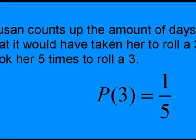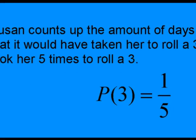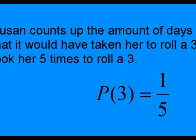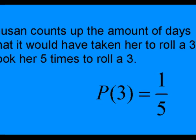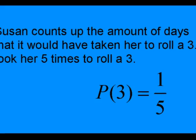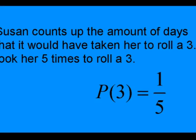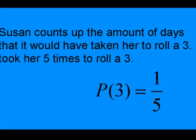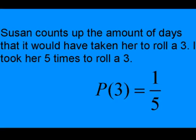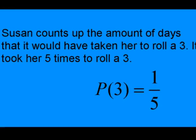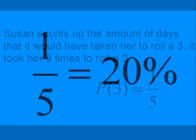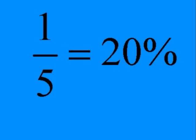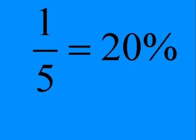Susan counts up the amount of rolls it took her to land on a 3. The first roll she got a 6, the second roll she got a 6, and after 3 more tries she finally landed on her 3. It took her 5 rolls — 1 out of 5 — meaning she had a 20% chance of landing on 3.